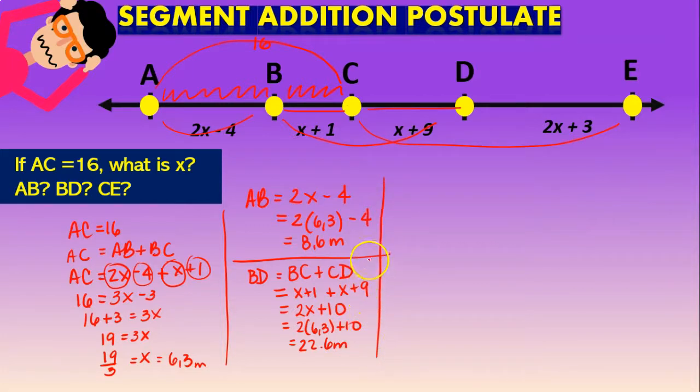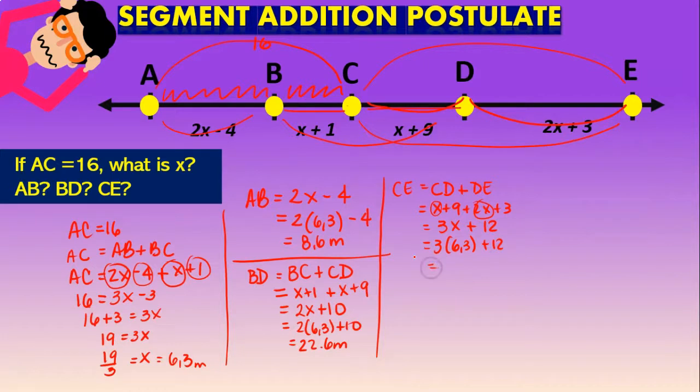And now we just have one question left, which is CE. And we know that CE is going to be CD plus DE. Again, CE is going to be CD plus DE. Which is going to be equal to x plus 9 plus 2x plus 3. Then x and 2x is going to be 3x. And then 9 and 3 is going to be 12. Meaning that when we substitute for the value of 6.3 plus 12, we're going to get a value of 3 times 6.3 plus 12. And that is going to give us 30.9, almost 31 meters.